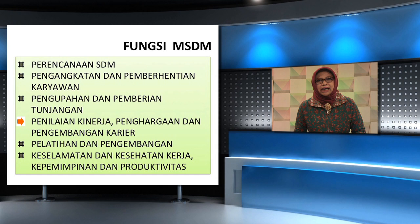Empat, penyelenggaraan kinerja, penghargaan dan pengembangan karir. Aktivitas utama penyelenggaraan kinerja, penghargaan dan pengembangan karir mencakup: A. Pendesainan sistem untuk penyelenggaraan kinerja karyawan secara individual. B. Pendesainan dan implementasi sistem penghargaan bagi semua karyawan. C. Pemberian bantuan kepada karyawan dalam pengembangan dan perencanaan karir.